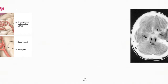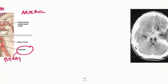The subarachnoid hemorrhage is usually arterial in nature, and it is usually due to the rupture of aneurysms. The most common aneurysm responsible for that is the Berry aneurysm at the Circle of Willis. Parenchymal hemorrhage may sometimes also be seen associated with it.